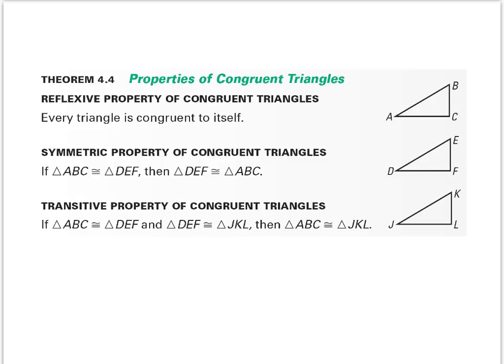A few more properties before we finish: the Reflexive Property of congruent triangles says every triangle is congruent to itself. The Symmetric Property is similar to what we learned in section 2.4 and chapter 3. We also use the Transitive Property. Go back and copy anything you need. Thank you for your hard work and diligence — let's keep striving for excellence. Have a good day and I'll see you tomorrow.